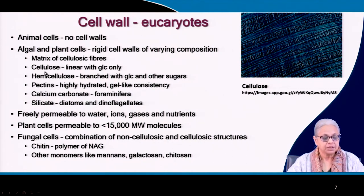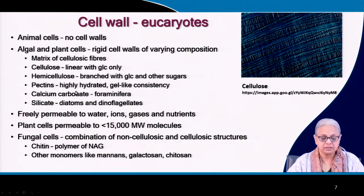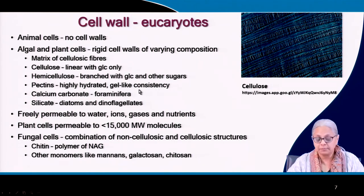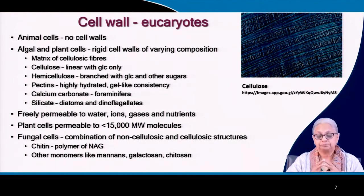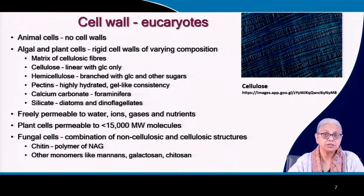These alternating cellulose fibers form a matrix. Cellulose is a linear strand of glucose connected by beta-1,4-glycosidic bonds. Hemicellulose is branched, containing glucose and other sugars with perhaps other bond types. Pectins are highly hydrated with a gel-like consistency. Some organisms like foraminifera contain calcium carbonate, while diatoms and dinoflagellates have shells made of silicate. The cell walls of eukaryotes are freely permeable to water, ions, gases, and nutrients.